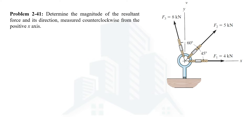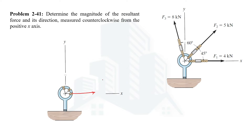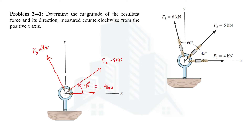Let's consider this hook on which these forces are acting. One force of magnitude 4 kilonewtons is acting exactly in the positive x-axis direction. The other force, F2, has a magnitude of 5 kilonewtons and makes an angle of 45° with the positive x-axis. There is a third force, F3, which acts at an angle of 60° from F2 and has a magnitude of 8 kilonewtons.